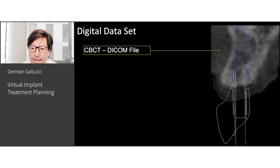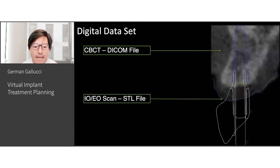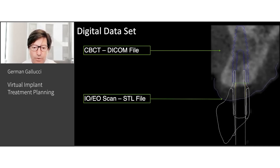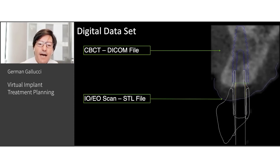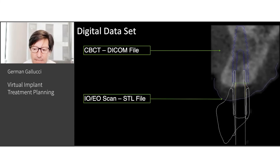We start by collecting a series of files. In this case you see a CBCT that produces a DICOM file, and an intraoral scanner that produces an STL file. These two files are then matched or superimposed so that you can reproduce the surface portion of the maxillary or mandibular arches with the three-dimensional concept given by the CBCT.